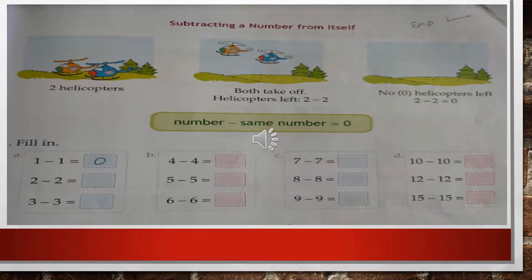Now, this is the example of how we can subtract a number from itself. Look at the picture examples carefully. As you can see, two helicopters are parked in a ground. In the second picture, both the helicopters have taken off. So how many are left in the ground? Nothing — the ground is empty, because there were only two helicopters and both have flown away. So we are having 0 helicopters left. We will write it as 2 minus 2 is equal to 0.